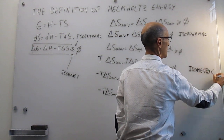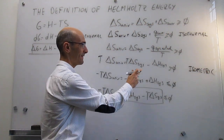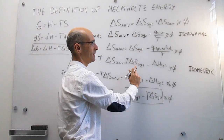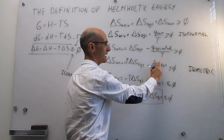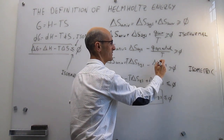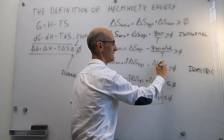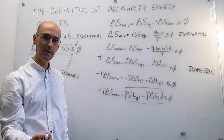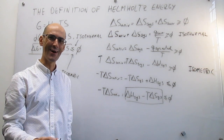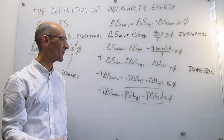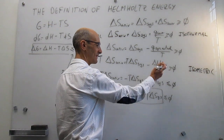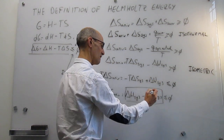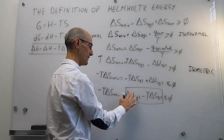In that particular case, the heat in the system is not the enthalpy. Instead, it's another state function, which is the internal energy. A constant volume heat is isochoric, but that is the same thing as the change in the internal energy of the system. That means that the enthalpy actually disappears.